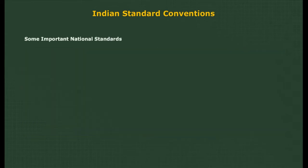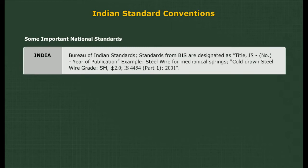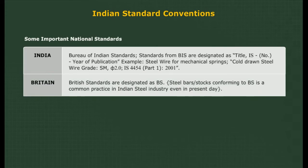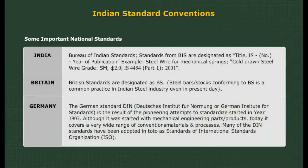Some important national standards: In India, Bureau of Indian Standards (BIS) designates standards. In Britain, British Standards are designated as BS; steel bars or stocks conforming to BS is a common practice in the Indian steel industry even today. In Germany, the German standard DIN is the result of pioneering attempts to standardize, started in the year 1907. Although it began with mechanical engineering parts, today it covers a very wide range of conventions, materials, and processes. Many DIN standards have been adopted in toto as standards of the International Standards Organization (ISO).